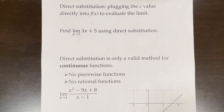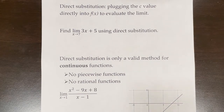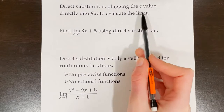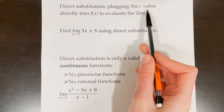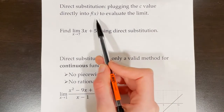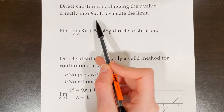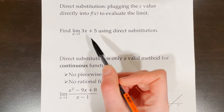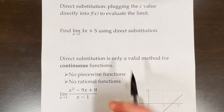1.5 is all about finding limits algebraically, sometimes through direct substitution. Direct substitution is plugging the c value — which is our limit value — directly into f of x, the function, to evaluate the limit.